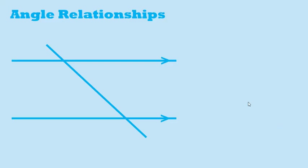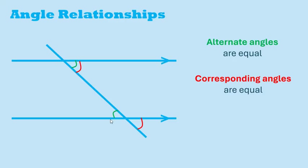Here are some important angle relationships found from a line intersecting two parallel lines. Alternate angles in this Z pattern are equal. Corresponding angles in this F pattern are also equal. And the co-interior angles add to 180 degrees.